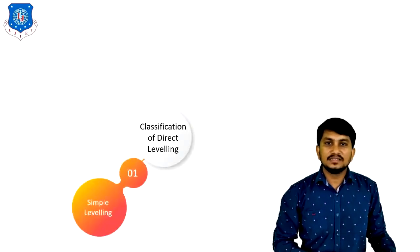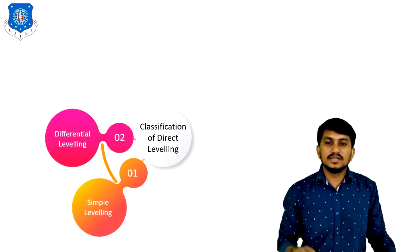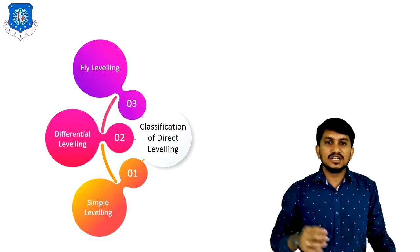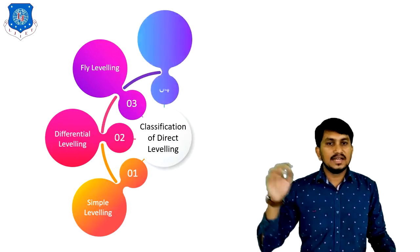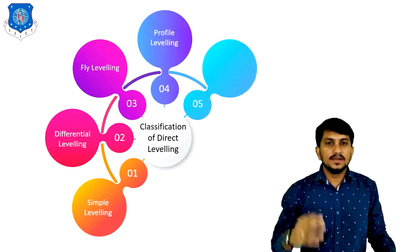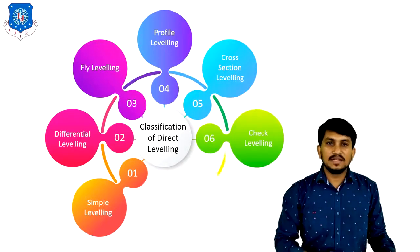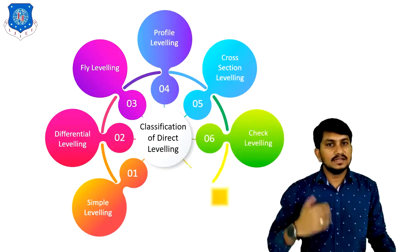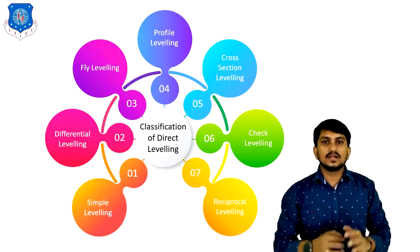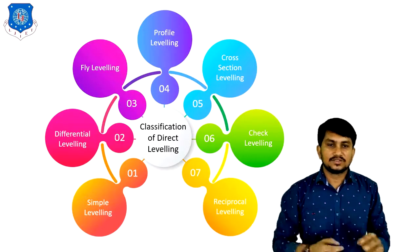Basically, there are a number of classifications of direct leveling. First is simple leveling, second is differential leveling, third is fly leveling, fourth is profile leveling, fifth is cross-section leveling, sixth is check leveling, and seventh is reciprocal leveling. So there are seven types of leveling we will study in this lecture.